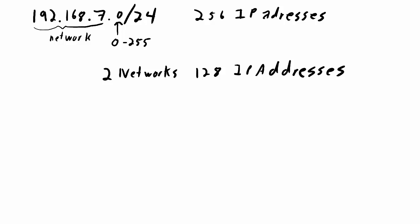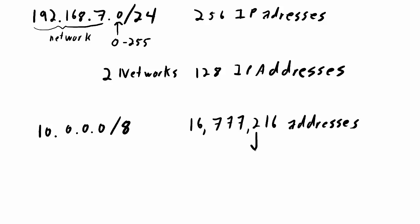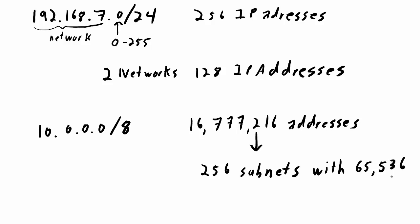A larger example: if I have the network 10.0.0.0/8, which has 16,777,216 addresses, I can split it up into 256 subnets each with 65,536 addresses. The total number of addresses isn't changing — I'm just splitting them into some number of subnets. Keep in mind that for each network, the first address is the network address and the last is the broadcast address, so they are not assignable to devices.